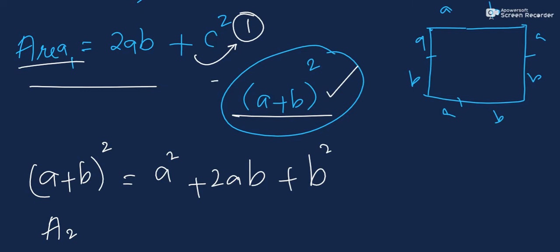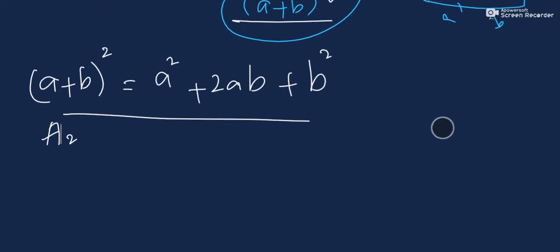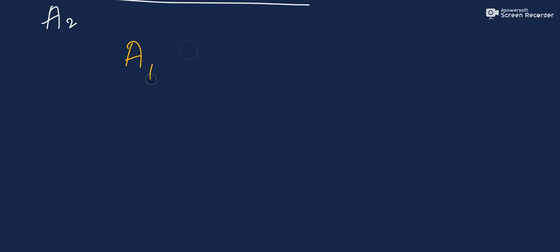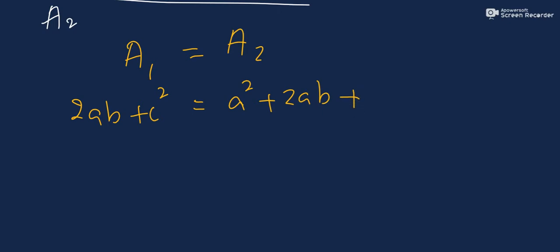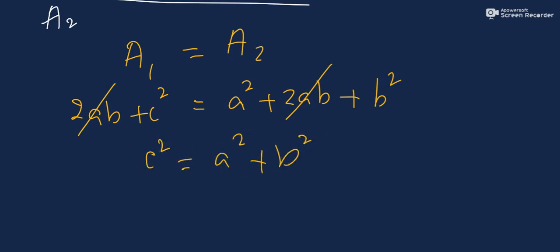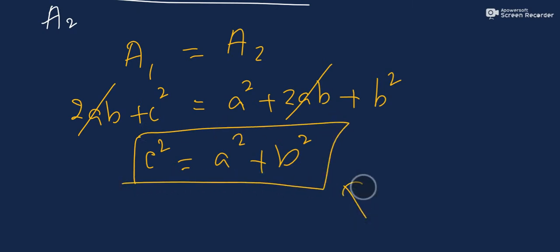Since both Area 1 and Area 2 represent the same bigger square, they must be equal. So: 2AB plus C squared equals A squared plus 2AB plus B squared. Subtracting 2AB from both sides gives us C squared equals A squared plus B squared — and this is the proof of the Pythagorean theorem!